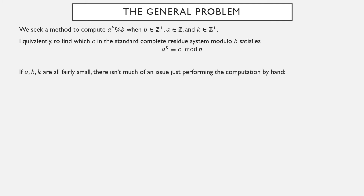Now, if a, b, and k are fairly small, we can just do this computation by hand. We're going to recursively compute powers of a and resolve them modulo b. So let's compute the remainder when 3 to the 8th is divided by 13. In other words, what is 3 to the 8th equivalent to modulo 13?